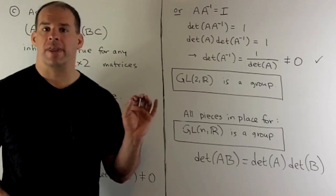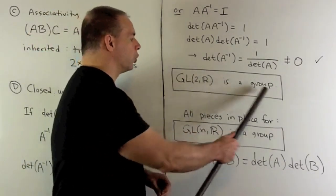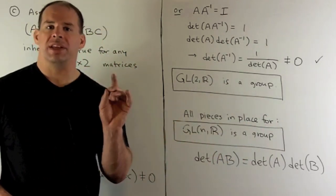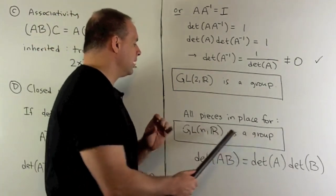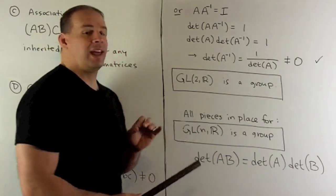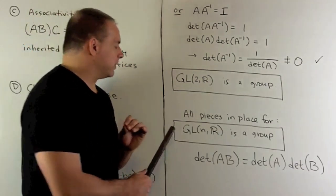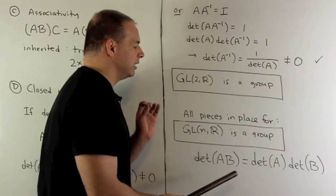So putting all that together, I have GL(2,R) is a group. And you'll note if you go through all the pieces in place for showing GL(n,R) is a group—and here we're talking about invertible n by n matrices—now to make this work, we're going to lean heavily on determinant of a product equals the product of the determinants.